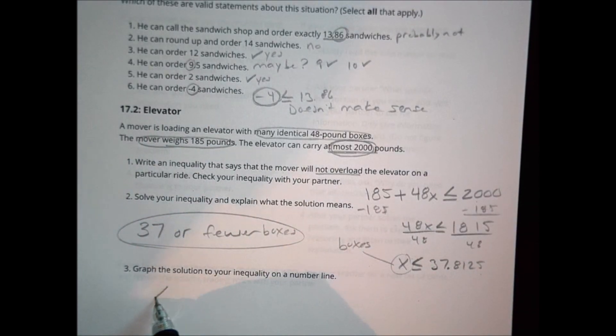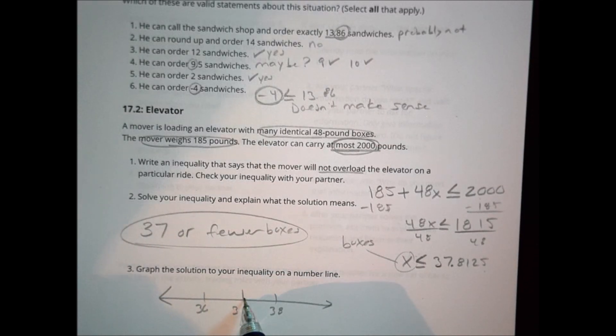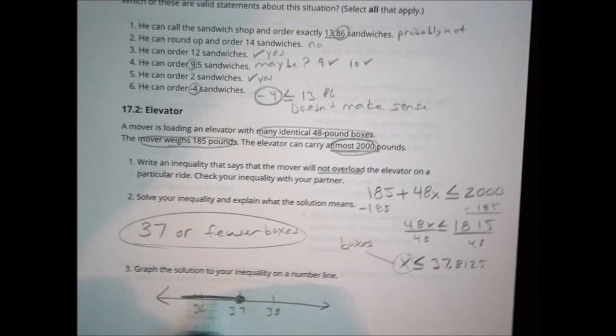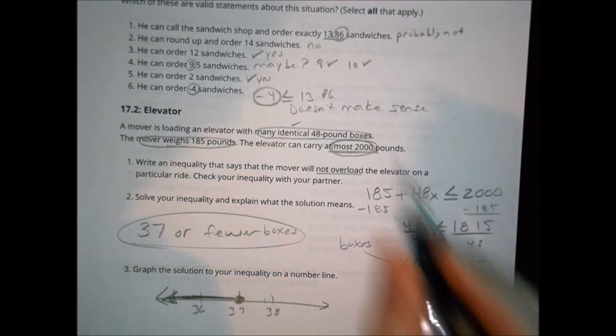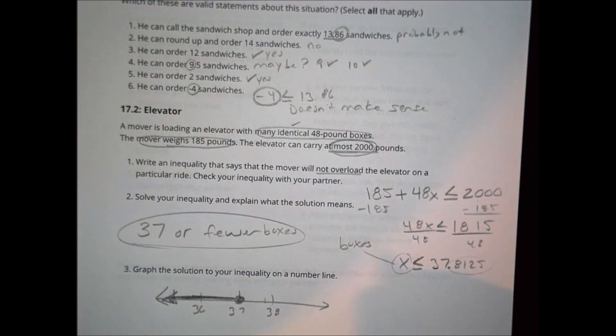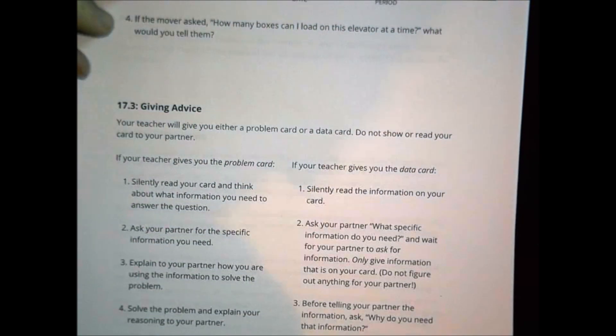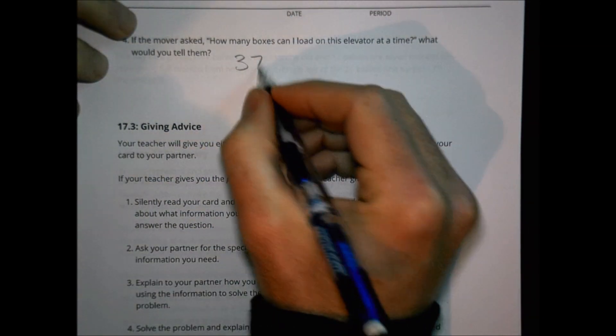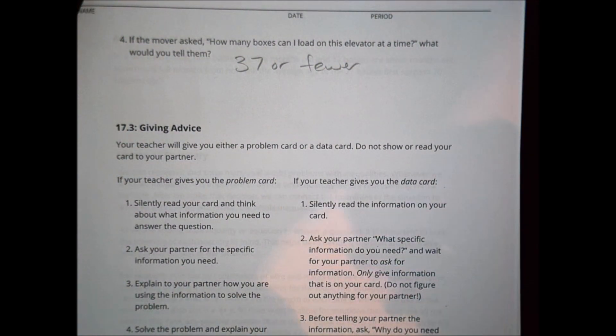To graph this solution, we'd have 37, 38, 36, and we would say that I can do 37 or less. I'm not going to graph the 0.8125 over here because there's not a box that is only 0.8125. Either it's a box or it's not a box because they're all identical. I'm going to take a whole box or not a whole box. If the mover asked how many boxes can I load in the elevator at a time, you would say 37 or fewer boxes. Couldn't do any more than that, 37 is the max, but he could always take less.